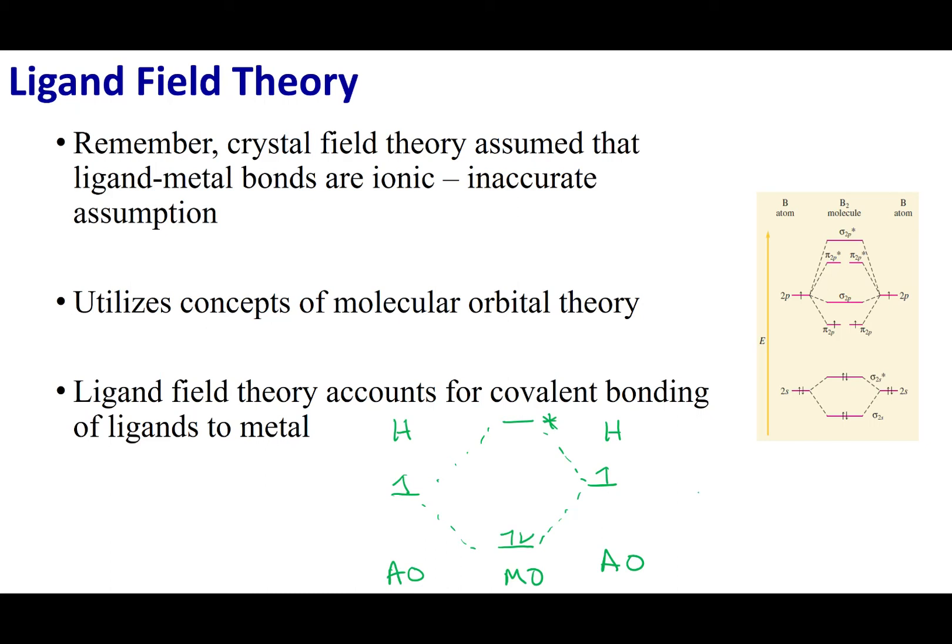And we can get to more complicated pictures. So you'll recall this from chapter 12. Here is the molecular orbital diagram for B2. Now what we can do is we can do the same for our complex ions.